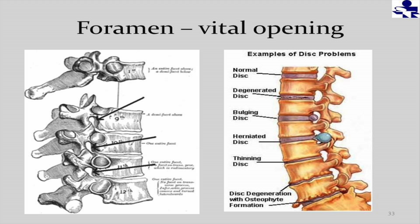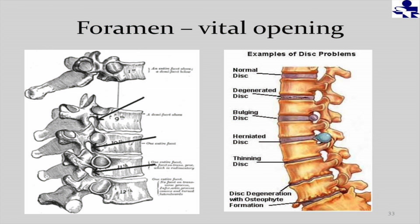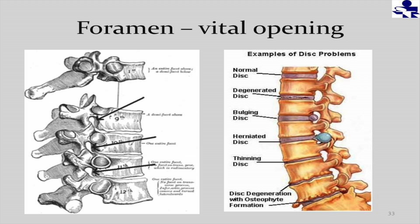With degenerative disc disease, the bones start getting closer to each other and you have all kinds of nerves in those bones — when they rub on something hard like bone on bone, it is extremely painful. Then you have a bulging disc that's starting to impinge on that foramen, pinching the nerve. Then you have a herniated disc that may really have a drastic effect on the nerve and the blood vessels. You get down to the thinning disc again — bone on bone — and with osteophyte formation, which is a bone spur, they can actually catch on bone as you're moving and be very, very uncomfortable.